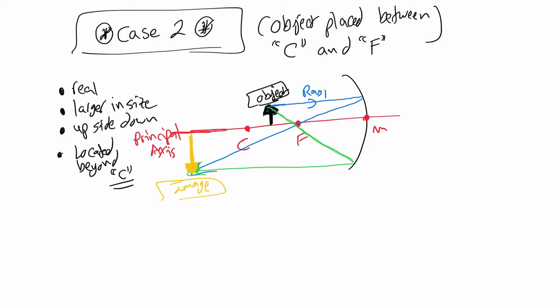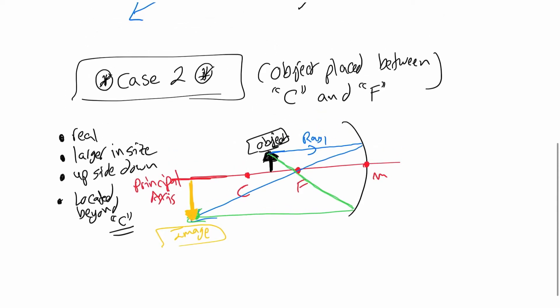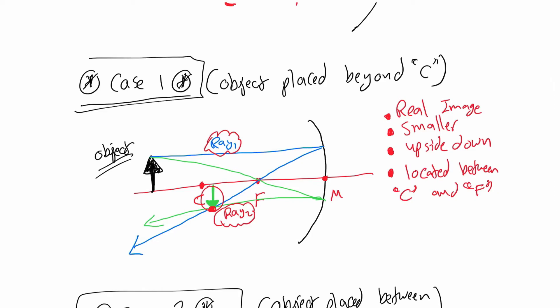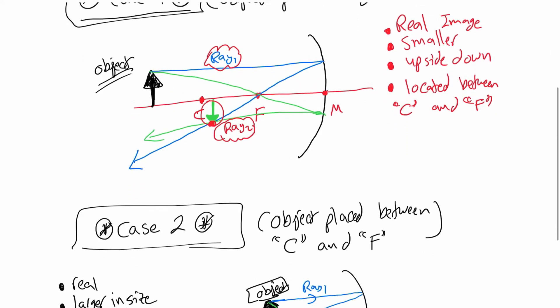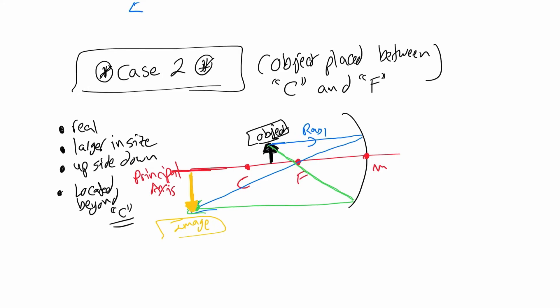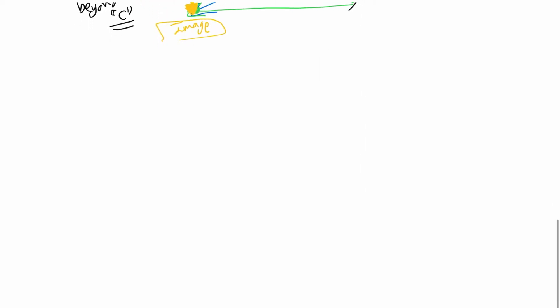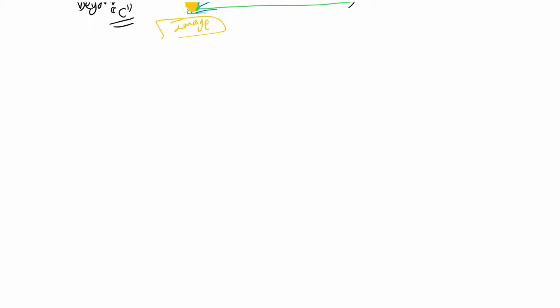To recap: in case number one the object is placed beyond C, and in case number two the object is placed between C and F. Both produce real images. The only case where a concave mirror produces a virtual image is when the object is placed between the focal point and the mirror — that is case number three.